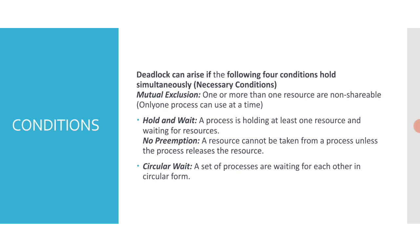When it comes to mutual exclusion, one or more than one resource is non-shareable — only one process can use it at a time. The equation is P(X) + P(Y) = 1: if P(X) is happening, P(Y) will not happen. Hold and wait is when a process is holding at least one resource and waiting for another resource.